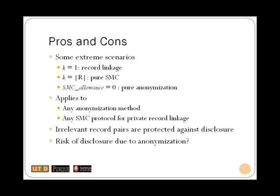The hybrid approach has various advantages over existing methods. First, record linkage and existing methods for private record linkage are all special cases of the hybrid approach. When anonymity requirement is set to 1, which implies no privacy, the problem becomes the ordinary record linkage problem. When data sets are fully anonymized, the hybrid method is equivalent to existing methods based on SMC. When data holders do not permit any SMC operations at all, our approach relies purely on anonymization. Second, the hybrid approach is applicable to any anonymization method and any SMC method for private record linkage. Our approach prevents disclosure of any mismatching record pairs to the querying party, so precision is always 100%, which is a very desirable property in terms of privacy. The only possible downside is the risk of disclosure inherent in sharing anonymized data sets; however, since data holders choose the level of anonymity themselves, this risk is adjustable.